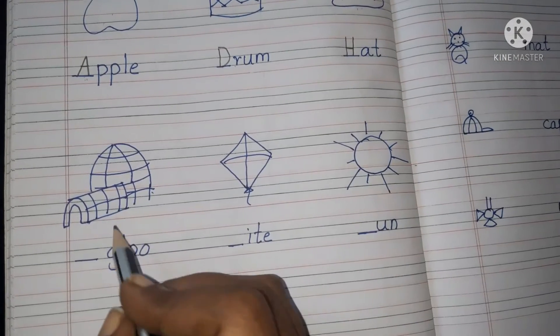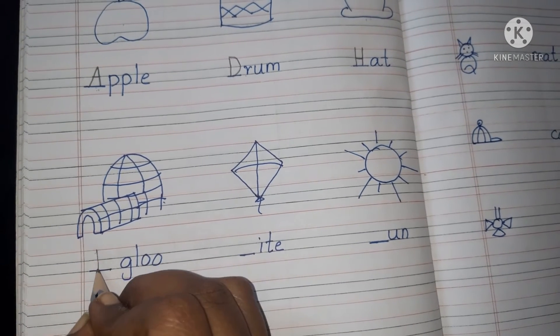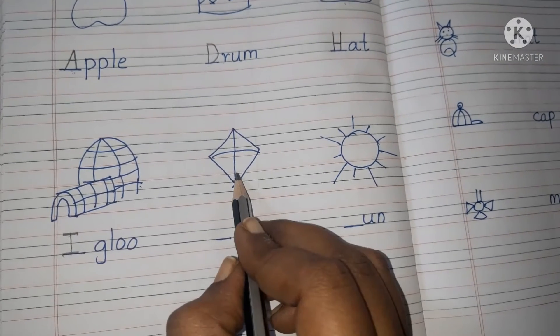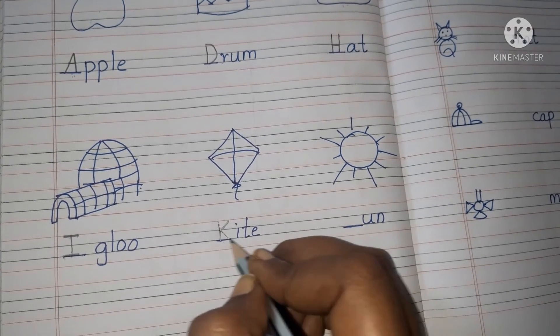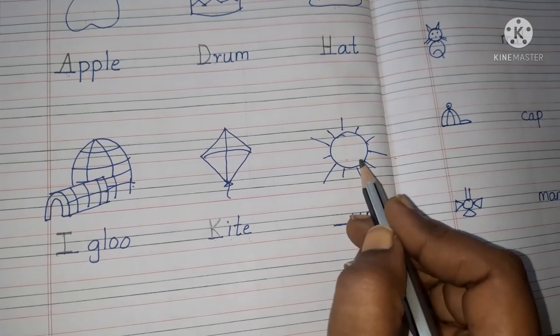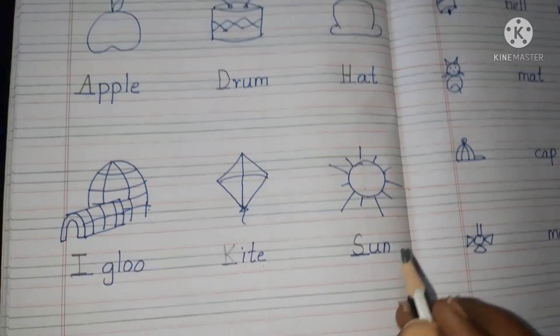Now come down. What is this picture? Igloo. I for igloo. So what is the missing letter? I. Next, kite. K for kite. So write K, K-I-T-E, kite. Next, sun. S for sun. What is the missing letter? Yes. Write S.